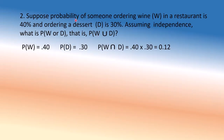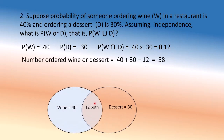Another problem: 40% wine, 30% dessert, assuming independence — what's the probability somebody will order wine or dessert? We have 40 who order wine, 30 who order dessert, and 12 who order both. How many order wine or dessert or both? That's 40 + 30 − 12 = 58, because we counted the 12 twice. This is called the union of events — the probability of this or that — and it equals P(A) + P(B) − P(A ∩ B).